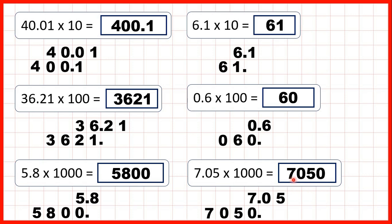And again that makes sense. We know that 7 times 1000 is 7,000 and 7.05 is just a little bit more than 7, so our answer is a little bit more than 7,000. So use estimation to check that your answer makes sense.